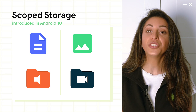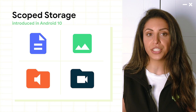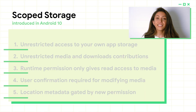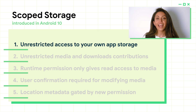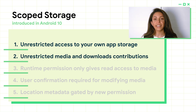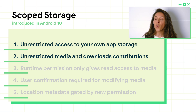Last year, with Android 10, we introduced the concept of scoped storage. The idea is to organize shared storage into specific collections and limit access to broad storage. These are the changes introduced for apps targeting Android 10. First, apps have unrestricted access to their own storage, both on internal memory and external volumes. Second, shared storage is divided into four organized collections: pictures, videos, music, and downloads. And apps can contribute files to these organized collections without any permission.